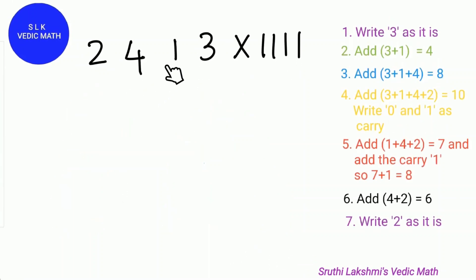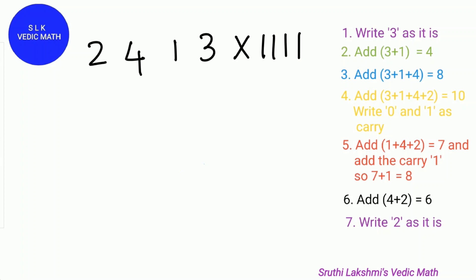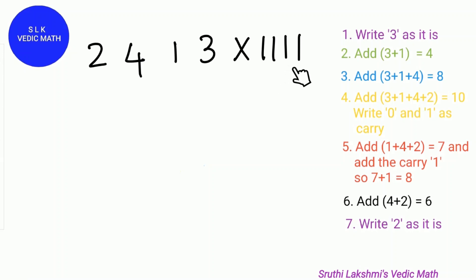Try another example: 2413 times 1111. If you want to multiply a number by 1111, we add maximum 4 numbers at a time, because there are 4 ones in 1111.